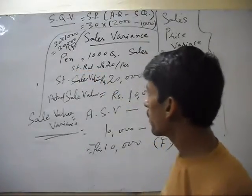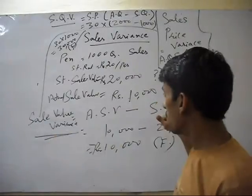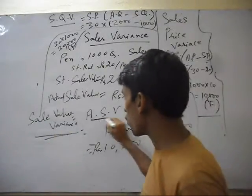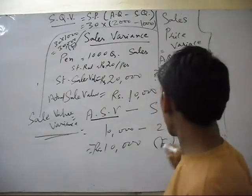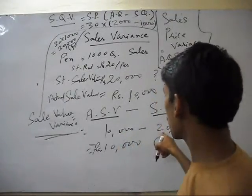Then for standard sales value: actual sales value minus standard sales value equals 10,000 minus 20,000.